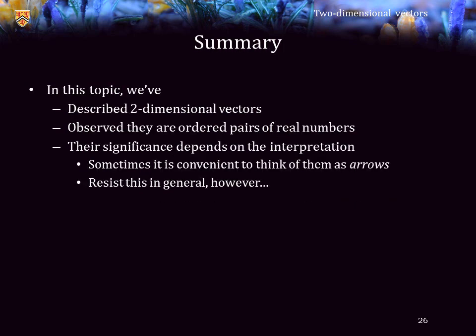To summarize, in this topic we've described two-dimensional vectors. Two-dimensional vectors are nothing more than ordered pairs of real numbers. Both numbers must represent similar things. For example, they may represent locations, or velocities, or accelerations, or amount of money in stocks, or voltages. Their significance depends on the interpretation. In some cases, it's convenient to think of them as points in the plane, or as arrows. However, do please resist this in general, because it's going to make it more difficult when we start looking at abstract vectors.